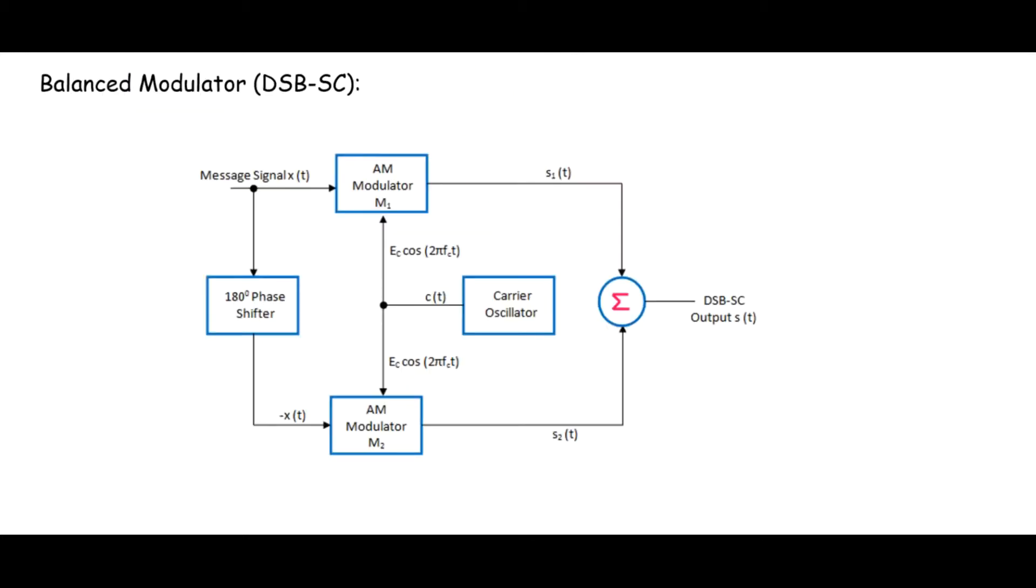Balanced modulator consists of two product modulators arranged in balanced configuration. Like we can see here, M1 is one product modulator and M2 is another one, and they are connected in balanced configuration. This arrangement is made to suppress the carrier. These modulators basically consist of switching modulators or square law modulators.